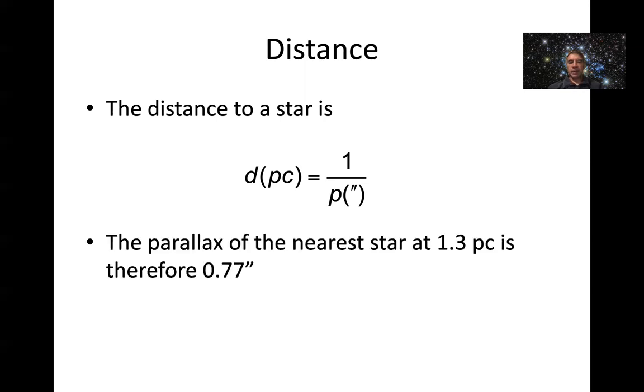So as an example, the nearest star, which is Alpha Centauri, a very bright star in the southern hemisphere, the nearest star to our sun is 1.3 parsecs away. And so therefore has a parallax angle P of 0.77 arc seconds, 1 over 1.3. So you can see this is already smaller than one arc second.